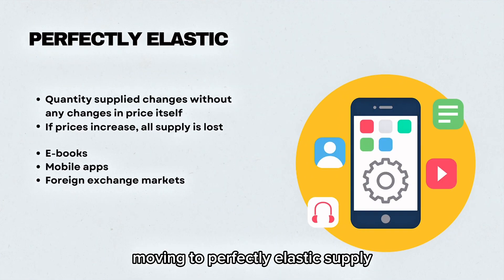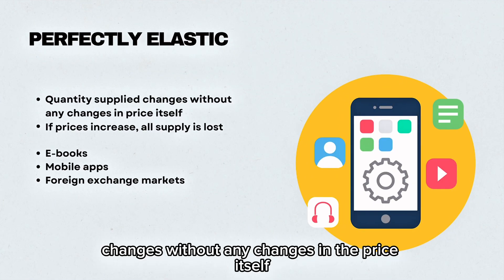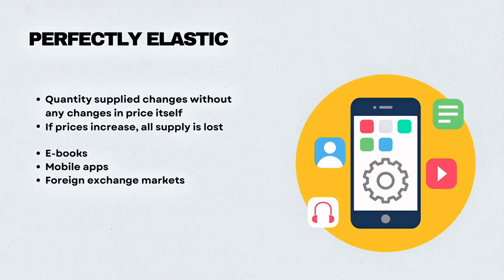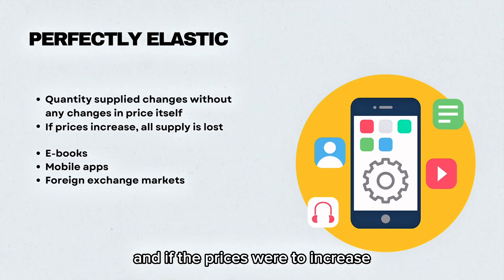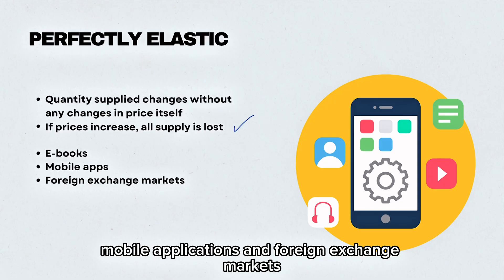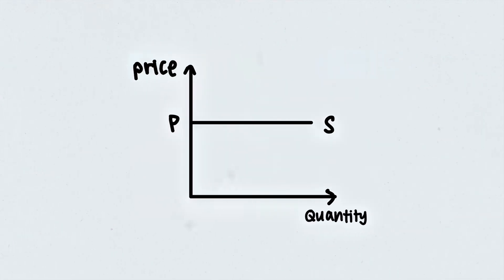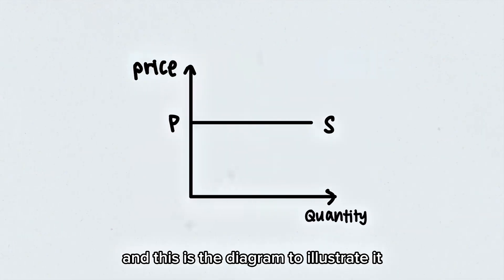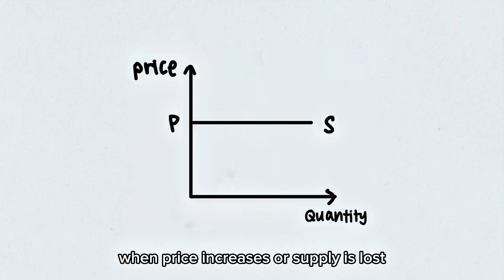Moving to perfectly elastic supply. This is when the quantity supplied changes without any changes in the price itself. And if prices were to increase, all supply is lost. Some examples include e-books, mobile applications, and foreign exchange markets. This diagram illustrates it — when price increases, supply is lost.